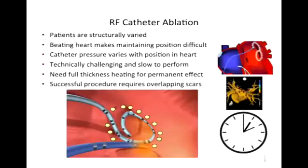With radiofrequency catheter ablation, the little yellow dots going around the lasso-shaped catheter in the vein indicate the tedious process required. The beating heart makes it difficult to keep our position, and how much pressure we put around that pulmonary vein varies by location within the left atrium. It's technically challenging and slow to perform. Doctors vary in their abilities and success rates, making it very dependent on how skilled your ablation physician is.